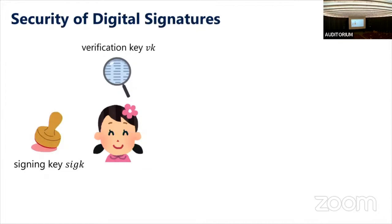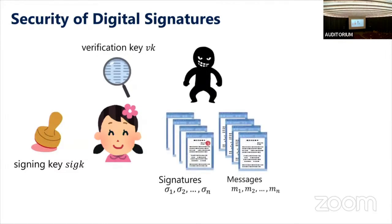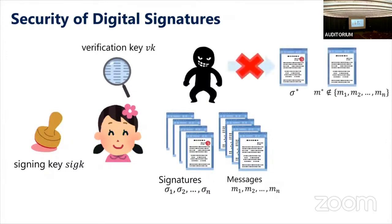What is the security of digital signatures? Suppose there is an adversary who can see the verification key (since it is public) but not the signing key. Additionally, the adversary can see many pairs of messages and signatures. The adversary then tries to generate a new signature on a new message not in the set of already-signed messages. The security requirement says the adversary cannot do this.